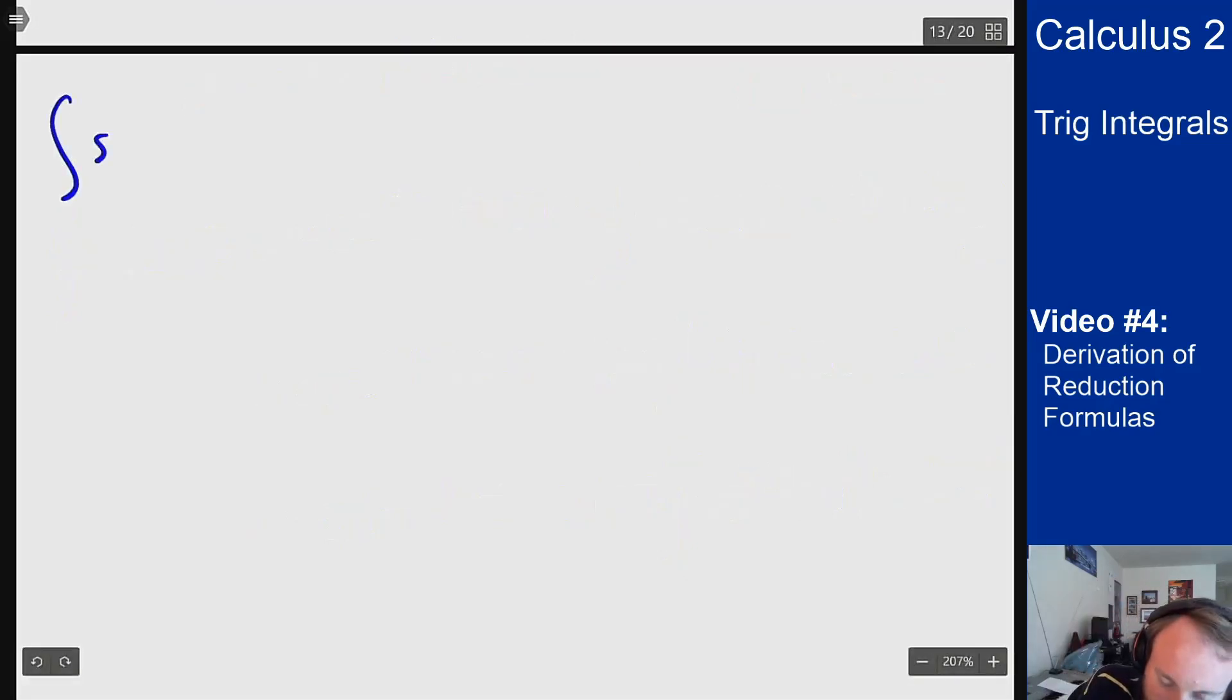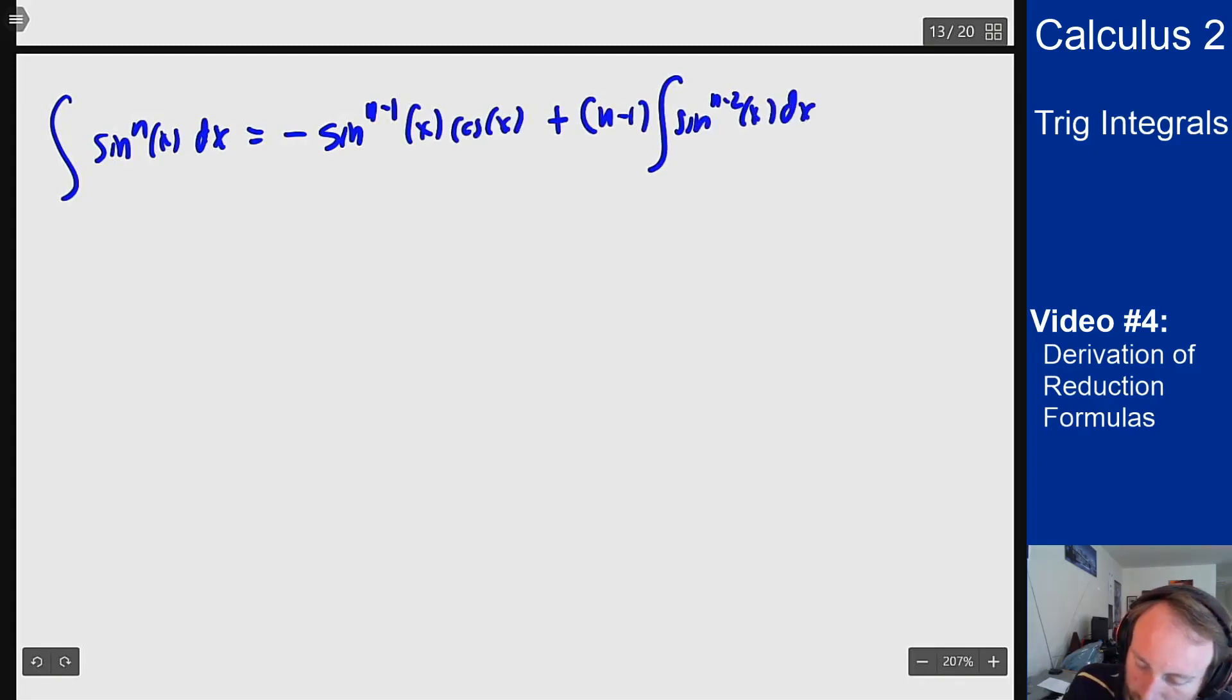Left hand side is still just integral of sine to the n of x dx. My first term is still sitting here. I then have an n minus 1 integral of sine to the n minus 2 of x and then minus an n minus 1 integral of sine to the n of x dx.